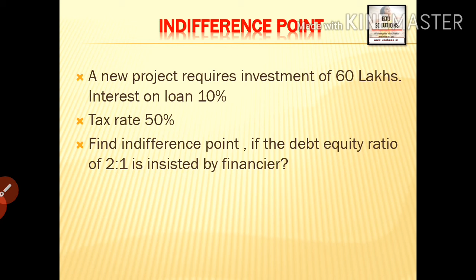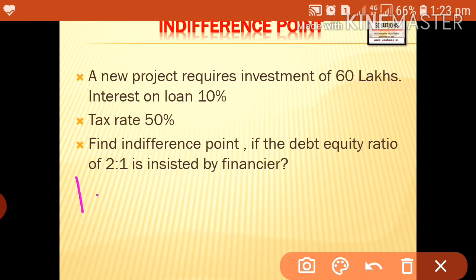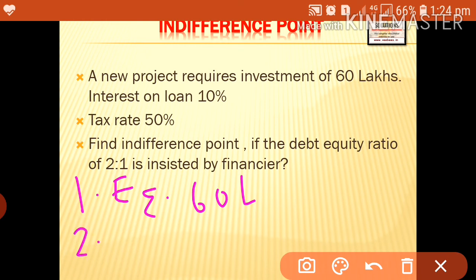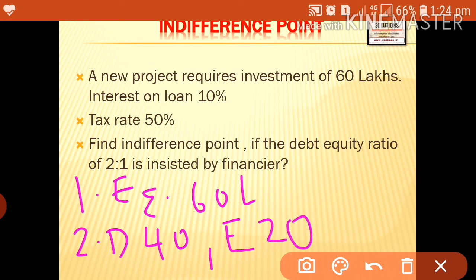We have to take two financial plans. Investment is 60 lakhs. Financial plan one is all equity — issue of equity shares for 60 lakhs. For financial plan two, with a debt-equity ratio of 2:1 on 60 lakhs, debt is 40 lakhs and equity is 20 lakhs. Interest at 10% on 40 lakhs is 4 lakhs.